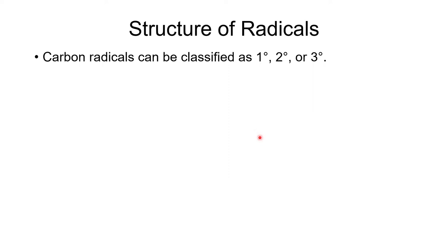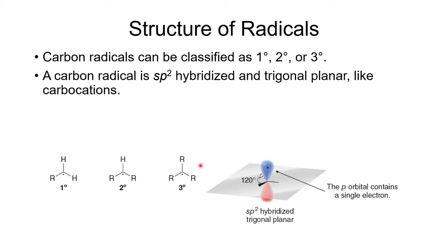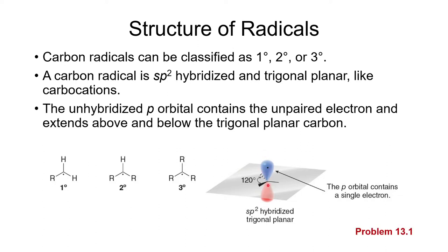Carbon radicals are classified as primary, secondary, or tertiary, indicating how many carbon-bearing R groups are attached to the radical carbon — these can be alkyl, aryl, or carbon groups with double bonds. Structurally, the radical carbon is sp2 hybridized, meaning the attached atoms are coplanar, and the p orbital perpendicular to those bonds holds the single unpaired electron.